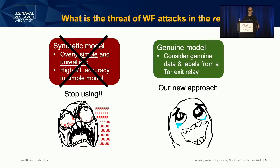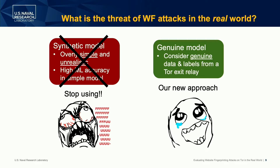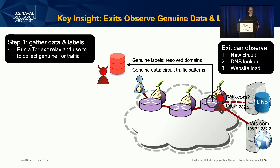In this paper, we're proposing to throw away the synthetic model and instead use a genuine model for website fingerprinting where we can consider genuine data and labels from a Tor exit relay. This will give us an understanding of the threat of the attack in the real world. The key insight in this model is that an adversary can run an exit relay. Exit relays can be run by anyone — it's a volunteer network.